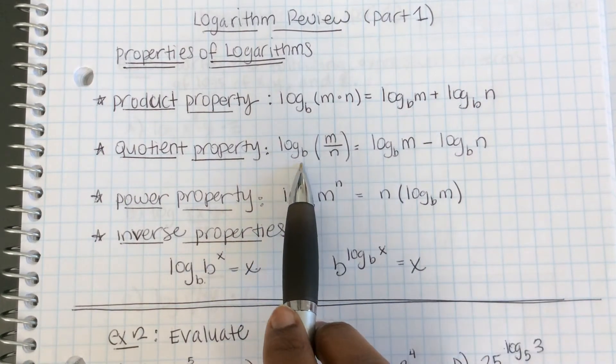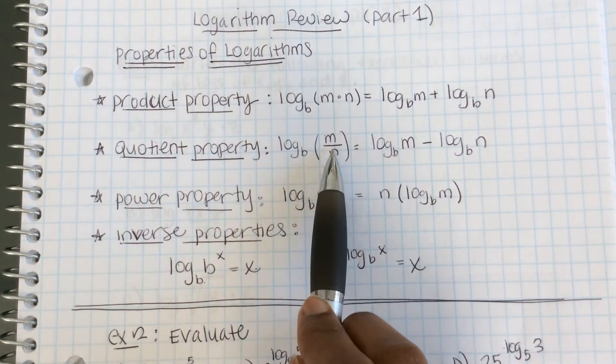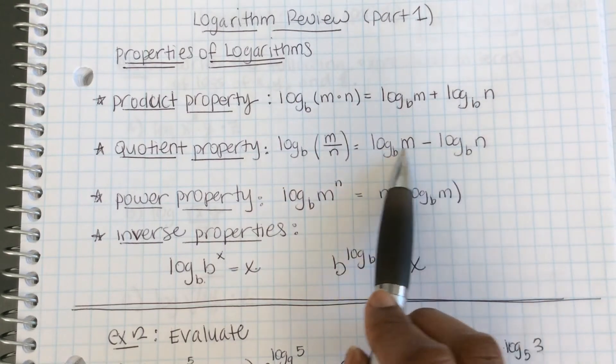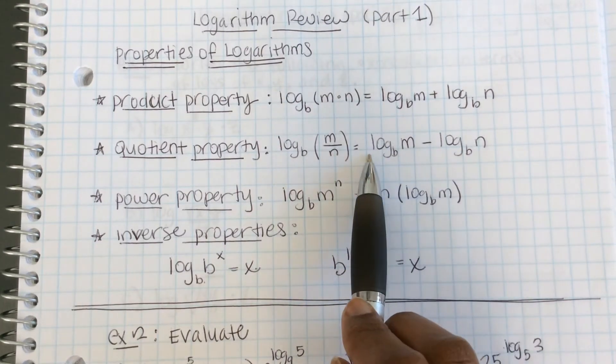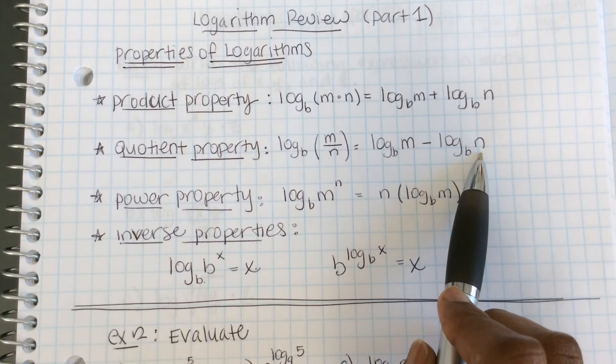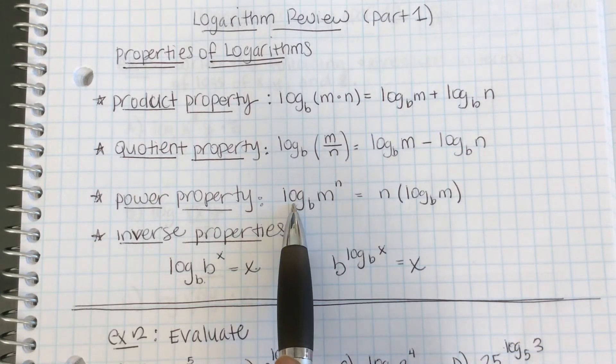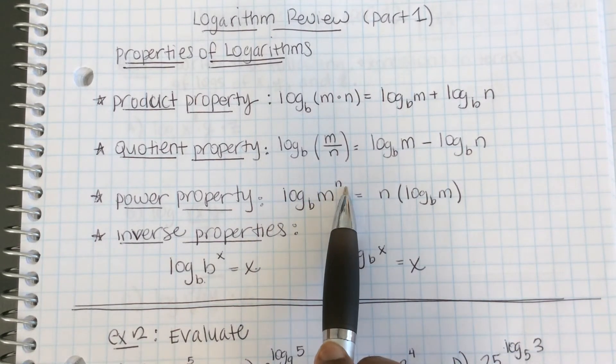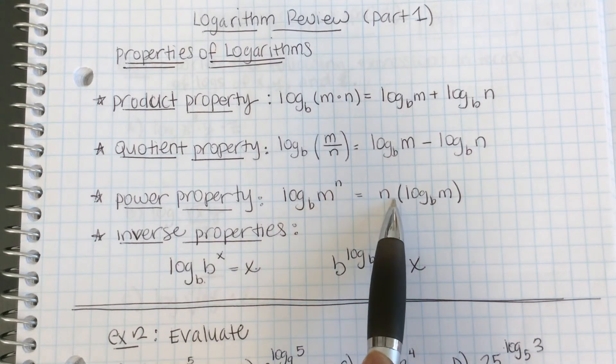When you have two numbers with the same base and you're dividing them, you subtract their exponents. So the quotient property is log of m divided by n equals log of m minus log of n. Here, when you have a power raised to a power, you can multiply.